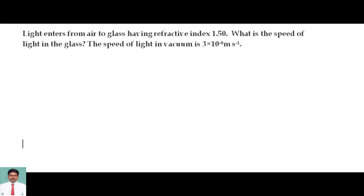Light enters from air to glass having refractive index 1.5. What is the speed of light in the glass? The speed of light in vacuum is 3 into 10 to the power 8.